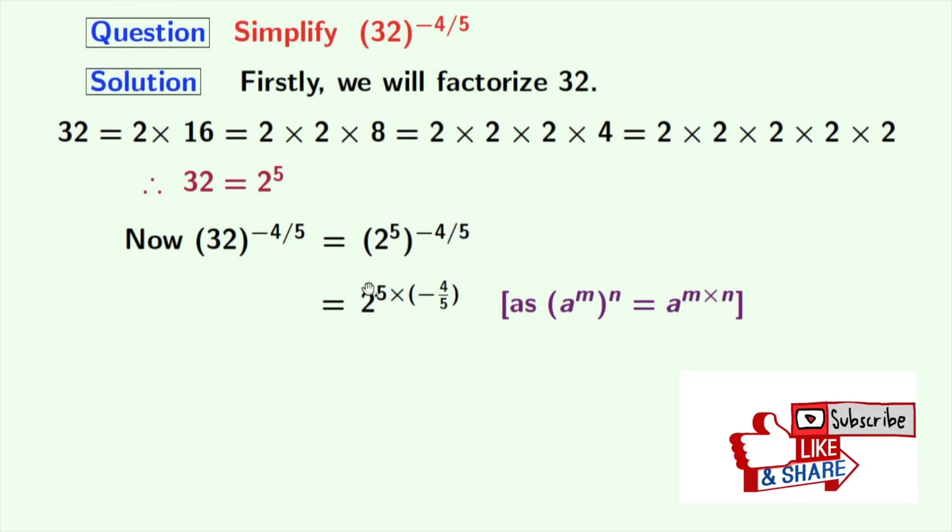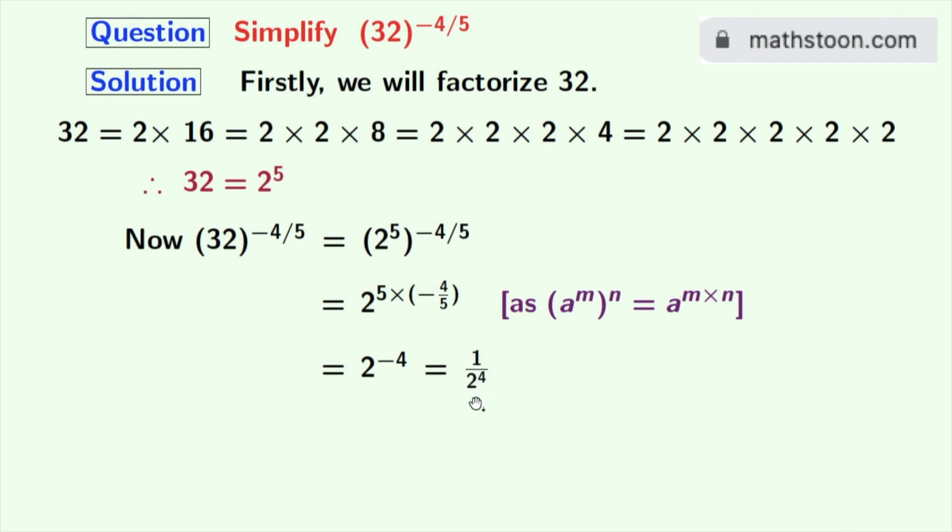After simplifying the power we get 2 power minus 4, and this is equal to 1 by 2 power 4. As we know that a power minus 4 is equal to 1 by a power 4, where a is 2.